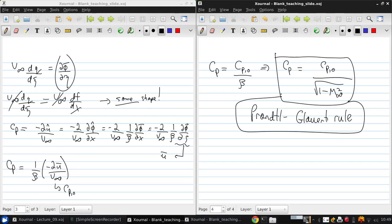Which says that you can correct the incompressible pressure distribution for compressibility by accounting for the free stream Mach number and obtain a new pressure distribution.